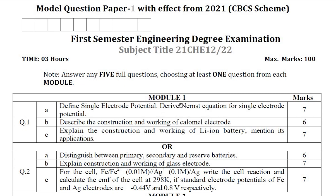Module 1 is of Electrochemistry. In this module, Question 1 has 3 sub-questions and Question 2 also has 3 sub-questions. You should answer either Question 1 or 2. From this module, one definition, one statement, and one compulsory problem will be there. Be aware of this.